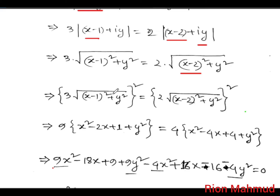Expanding: x minus 1 whole square plus y squared on the left, and x minus 2 whole square plus y squared on the right. After simplification, we work through x squared terms.